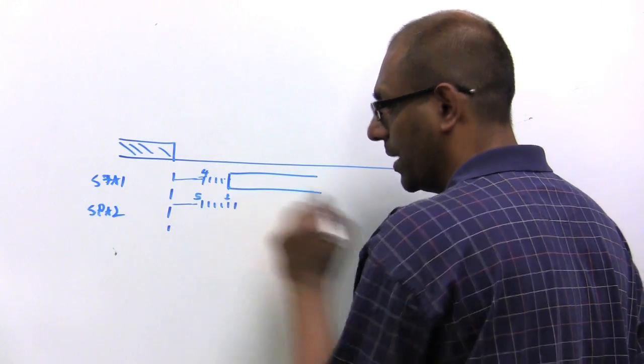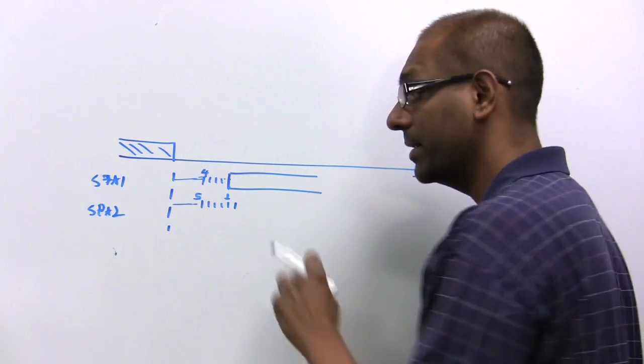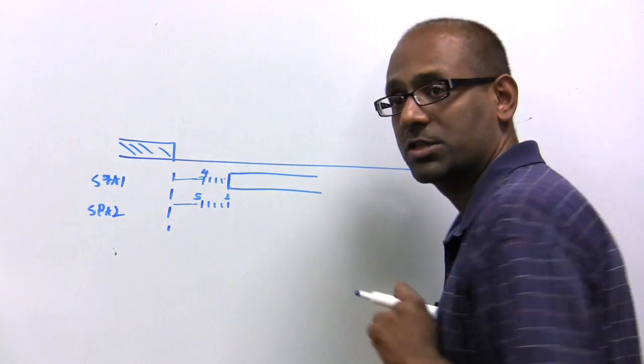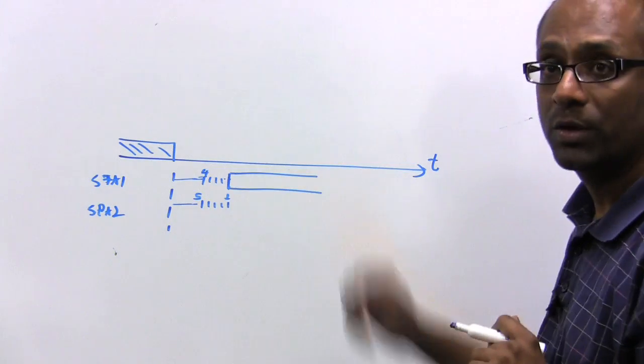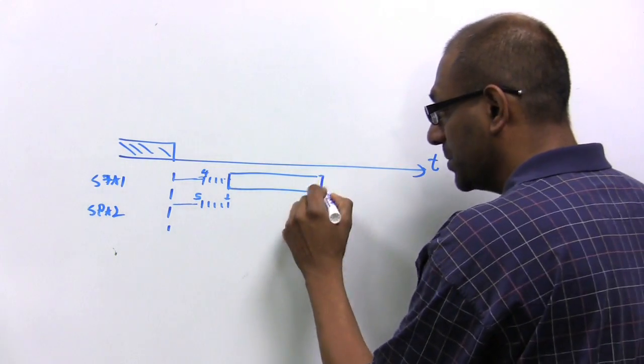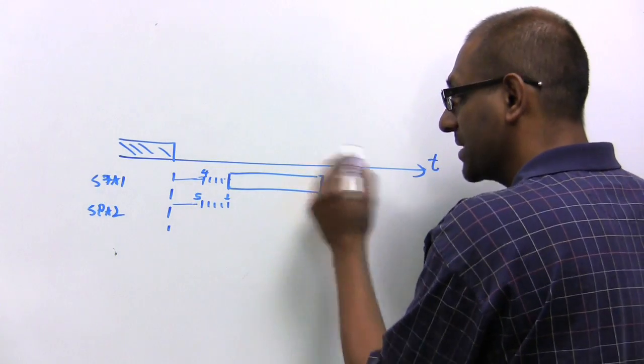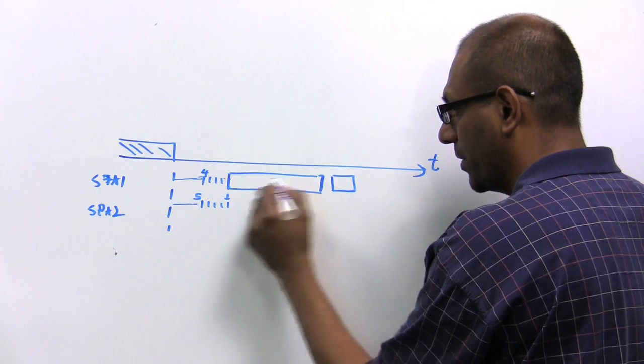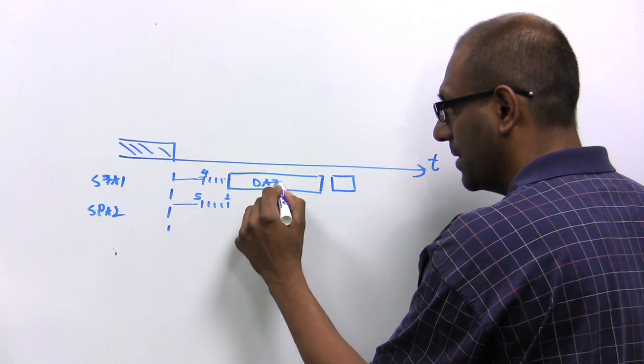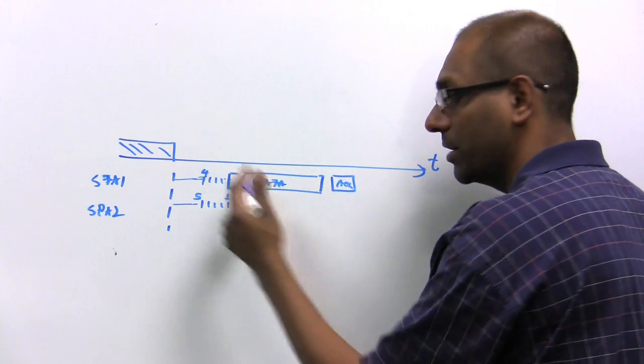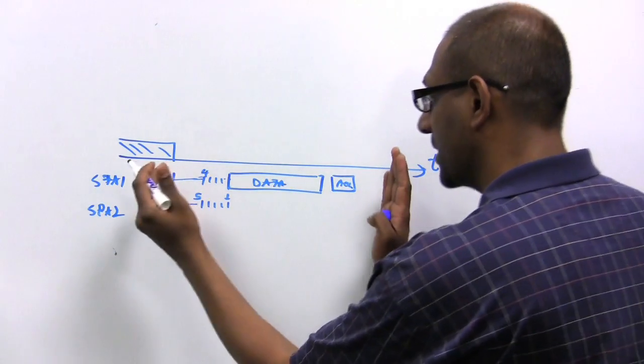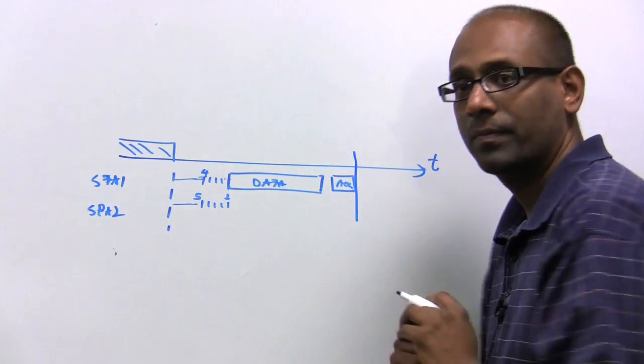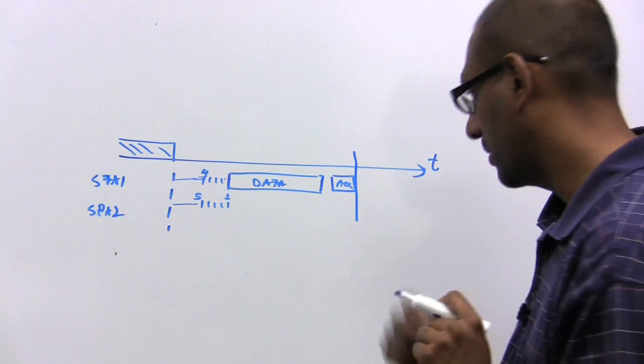During this period, station 2 had a backoff value of 1, therefore it couldn't transmit, therefore it stops counting down. Station 1 wins its transmission. It transmits one frame, and then its intended receiver sends an acknowledgement for it. So this is the data here, and then station 1 continues. Essentially this entire phase starts again.